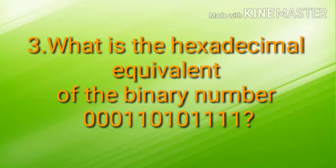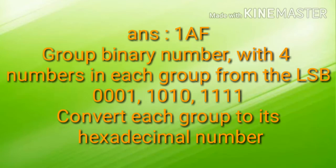The next question was: what is the hexadecimal equivalent of the binary number 000101011111? The answer is 1AF. To get it, group the binary numbers with 4 numbers in each group from the LSB. So the grouping will be 0001 | 0101 | 1111, and convert each group to its hexadecimal equivalent. Thus we get the answer 1AF.